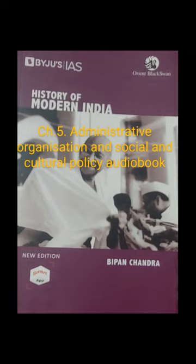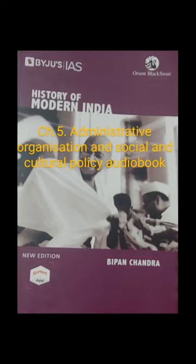The British administration in India was based on three pillars: the civil services, the army, and the police. This was so for two reasons. The chief aim of British Indian administration was the maintenance of law and order and the perpetuation of British rule. Without law and order, British merchants and manufacturers could not hope to sell their goods in every nook and corner of India. The British, being foreigners, could not hope to win the affections of the Indian people and therefore relied on superior force rather than on public support for the maintenance of their control over India.